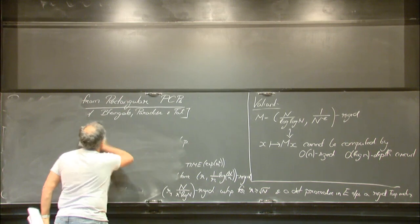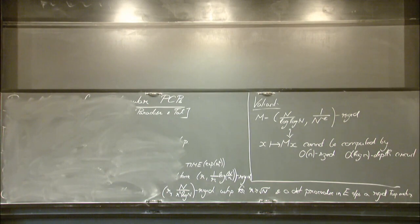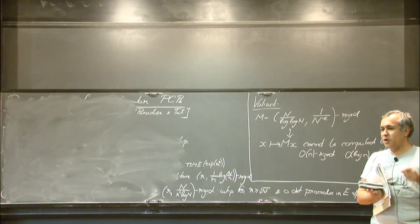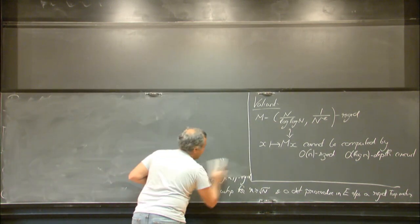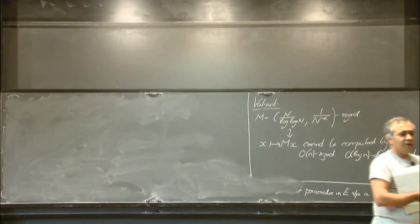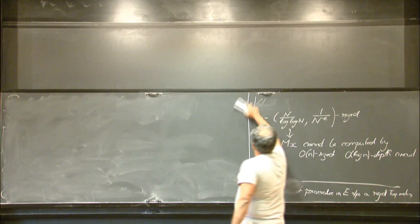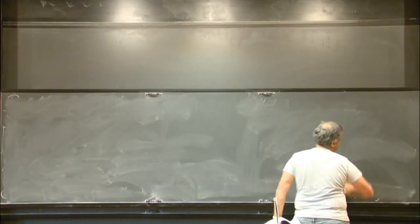The guiding principle behind the proof strategy is: any proof of a hard theorem must itself be complex. They instantiate 'complex' as 'rigid': proofs of hard statements, when viewed as matrices, must not only have high rank but be far from any low rank matrix.